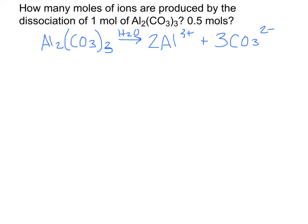The question asks how many moles of ions are produced by the dissociation of one mole of Al₂(CO₃)₃. Let's start with one mole. We need to figure out how many moles of ions are produced, and a big factor is looking at those coefficients because they give us the ratio in which they form.